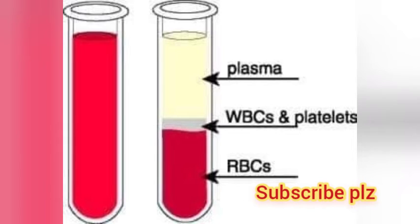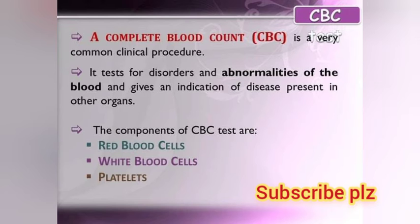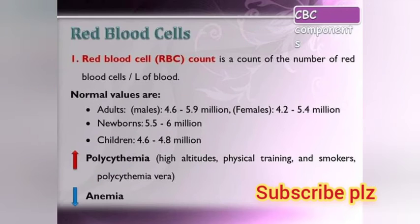Red blood cells, also known as RBCs — the RBC count is the count of the number of red blood cells. Normal values are: adult males 4.6 to 5.9 million, females 4.2 to 5.4 million, newborns 5.5 to 6 million, and children 4.6 to 4.8 million.